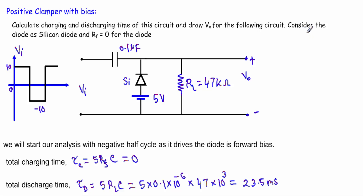There is a slight problem — we have to consider the diode as a silicon diode with forward resistance Rf equal to zero. This circuit contains a capacitor of 0.1 microfarad, a load resistor of 47 kilo-ohm, and a silicon diode. Since the diode is oriented in the upward direction, this is a positive clamper circuit.